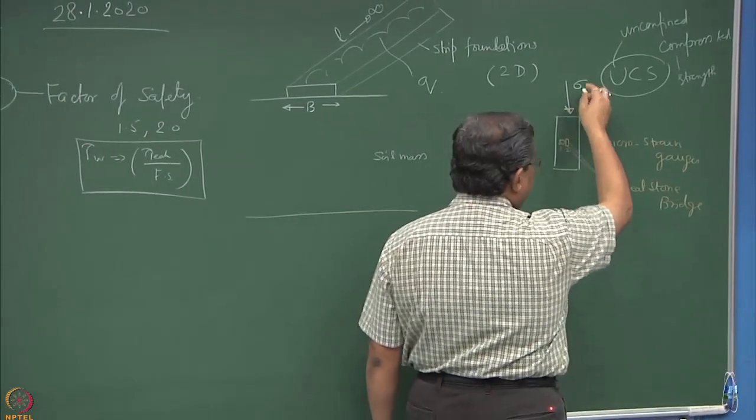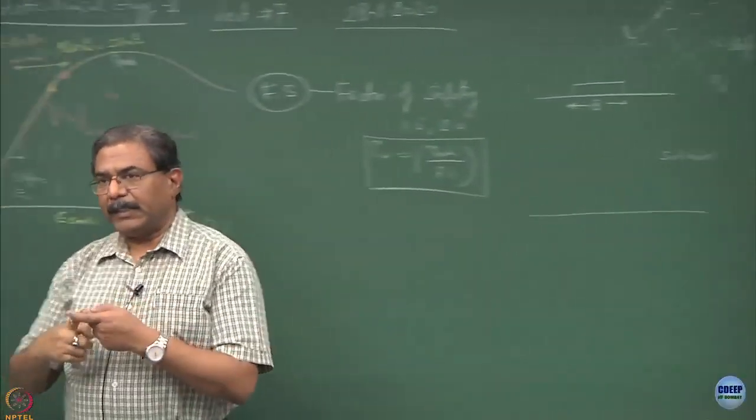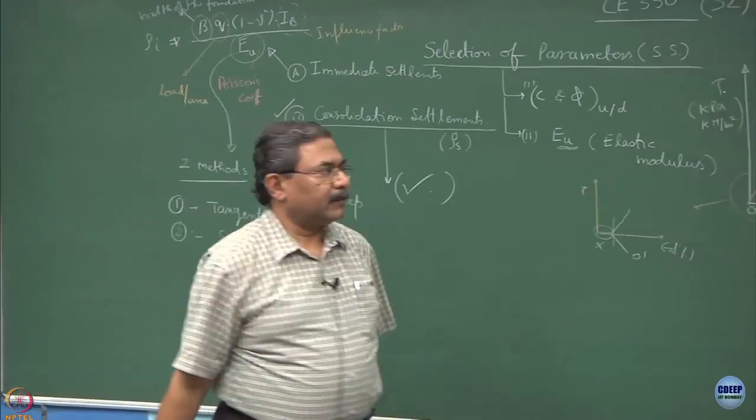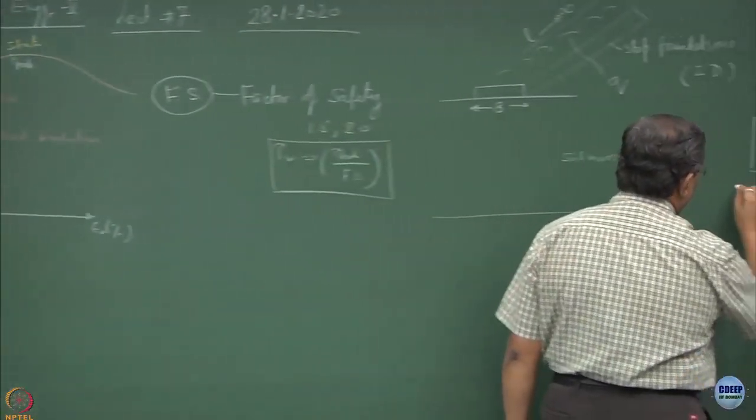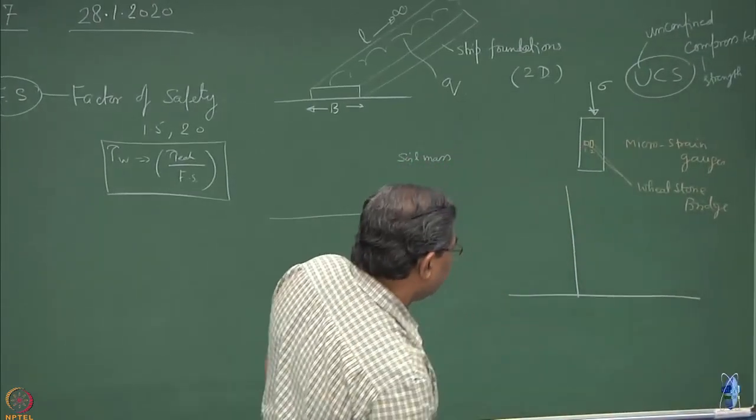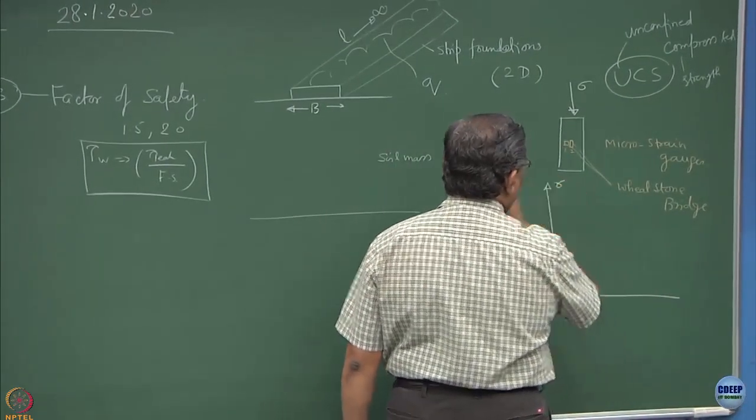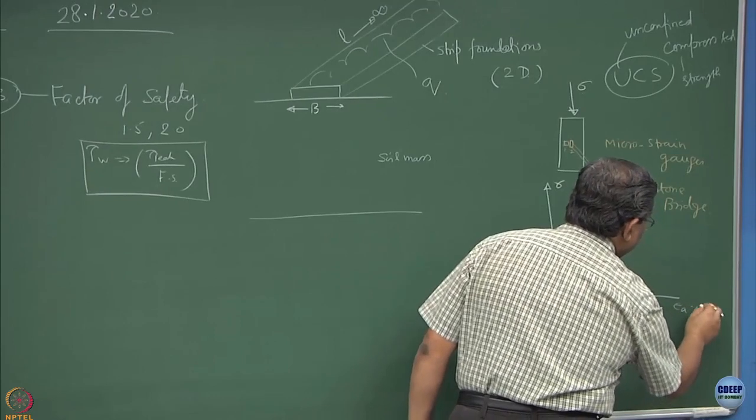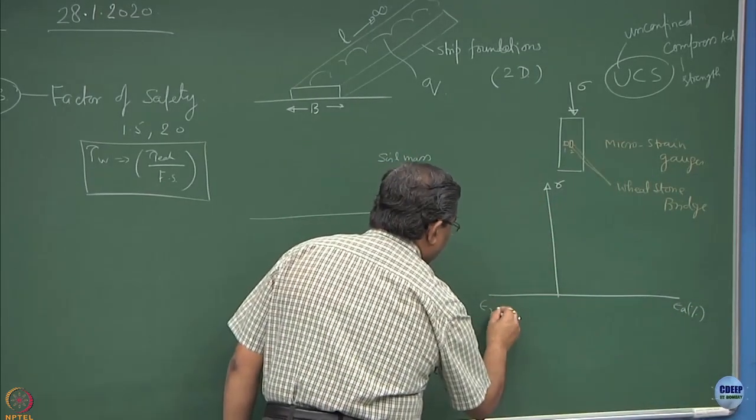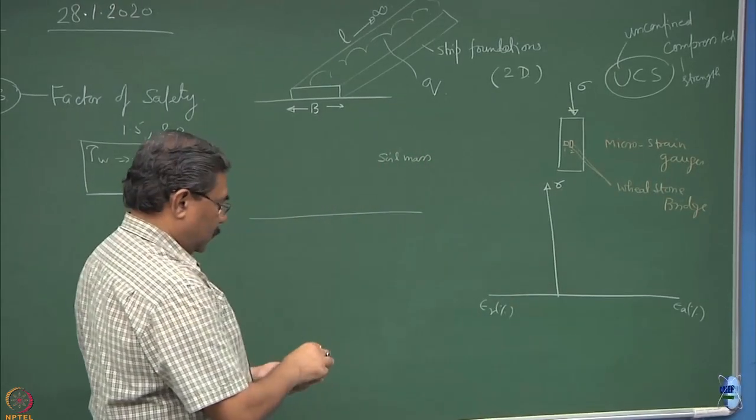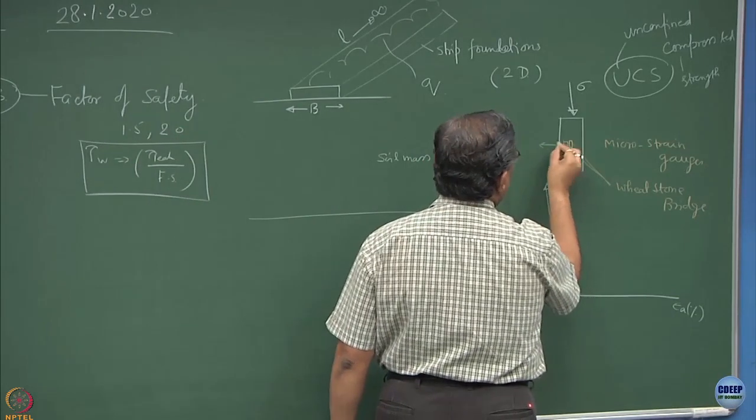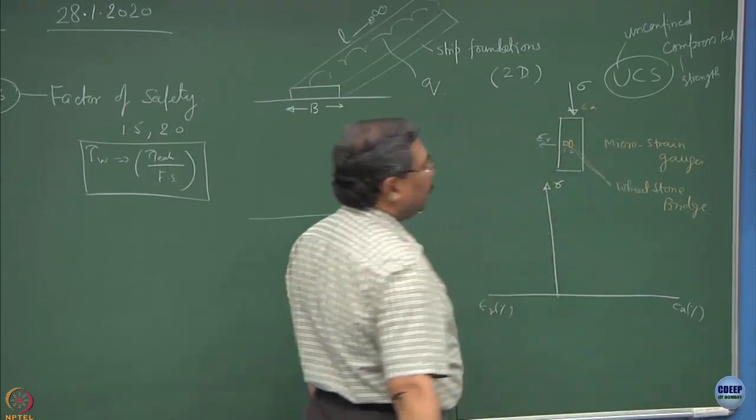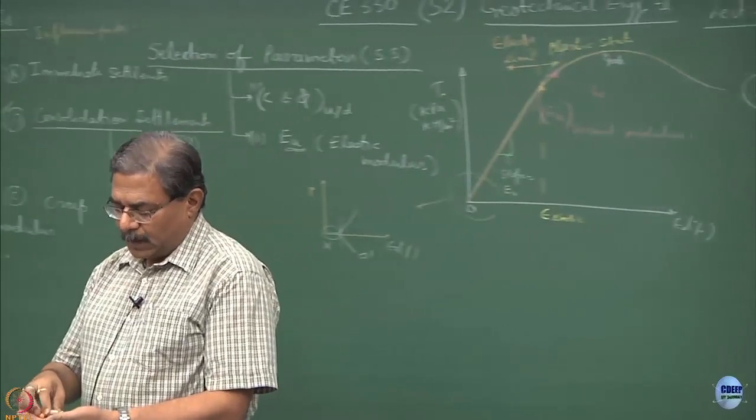When you apply this stress, what I am interested in is noticing the strains which the sample undergoes in the axial direction and in the lateral direction. This is the confining stress. If I define this as epsilon_a axial strain, and this is epsilon_r the radial strain, epsilon_r is in the direction of confinement.